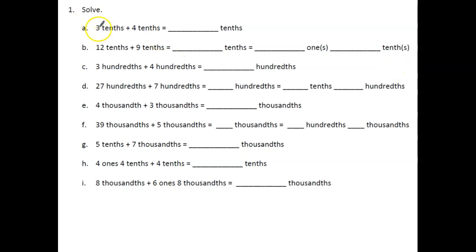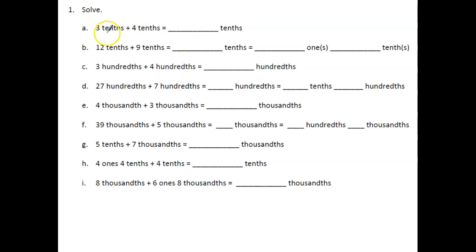So let's go ahead and dive into this lesson. Number one gives us unit form: we have 3 tenths plus 4 tenths. Because they're like units — they're both tenths — that's simply going to be 7 tenths.